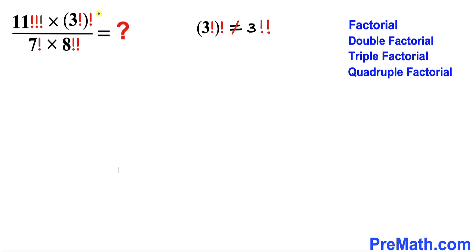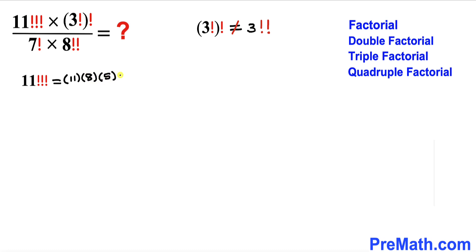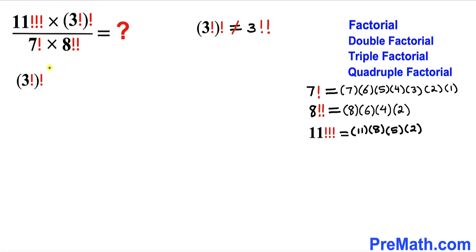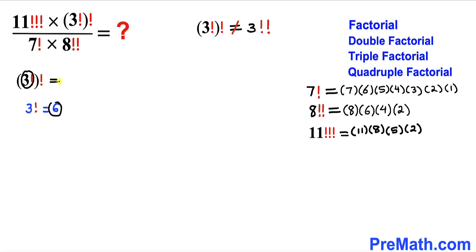Now let's focus on the original problem. For 11 triple factorial, since we subtract 3 each time, that gives us 11 times 8 times 5 times 2. For the nested factorial, we first evaluate inside the parentheses: 3 factorial equals 3 times 2 times 1, which is 6. So we replace 3 factorial with 6 and then apply the outer factorial.